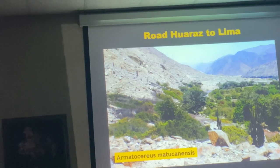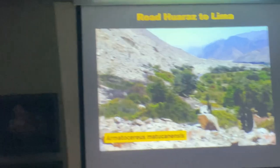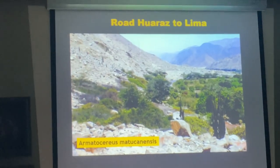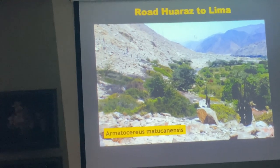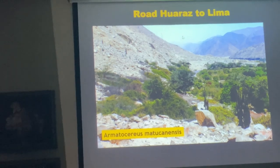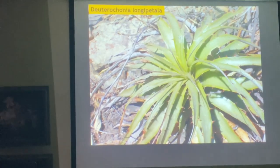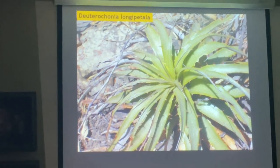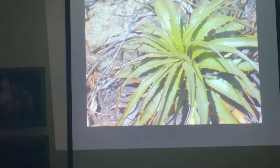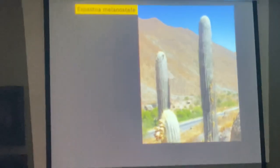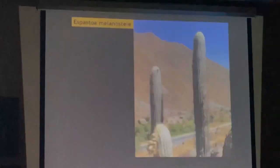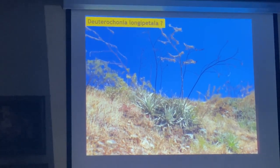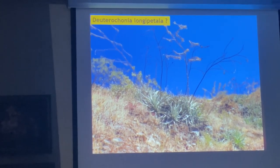From Huaraz, we start heading down to the coast toward Lima. We find some more cactus — the vegetation gets very, very dry. You can see a little bit of fog but not enough to have many bromeliads. Deuterocohnia longipetala is fairly common and found everywhere. You start seeing more cacti as you approach the coast — Espostoa melanostele with beautiful yellow spines.